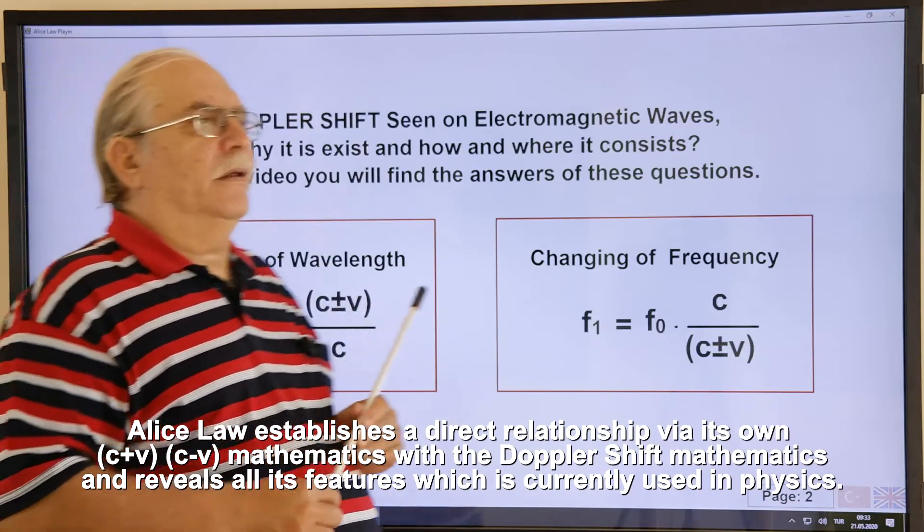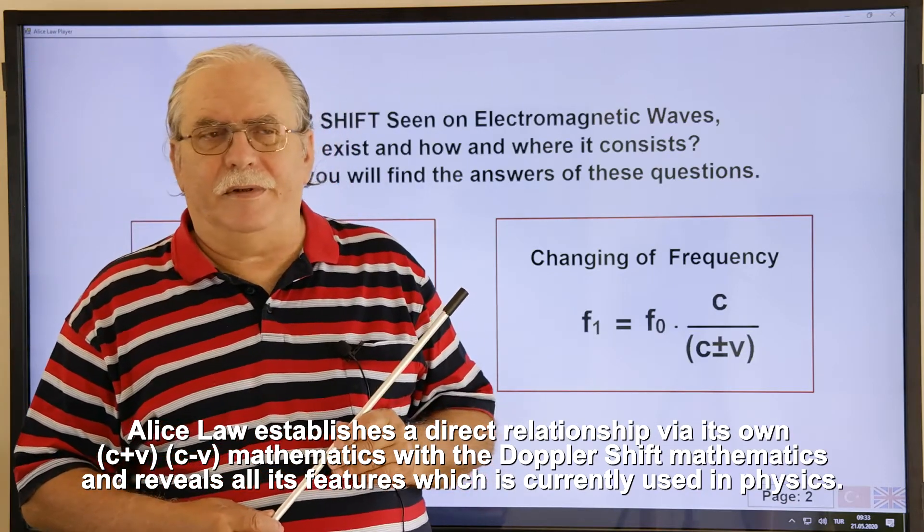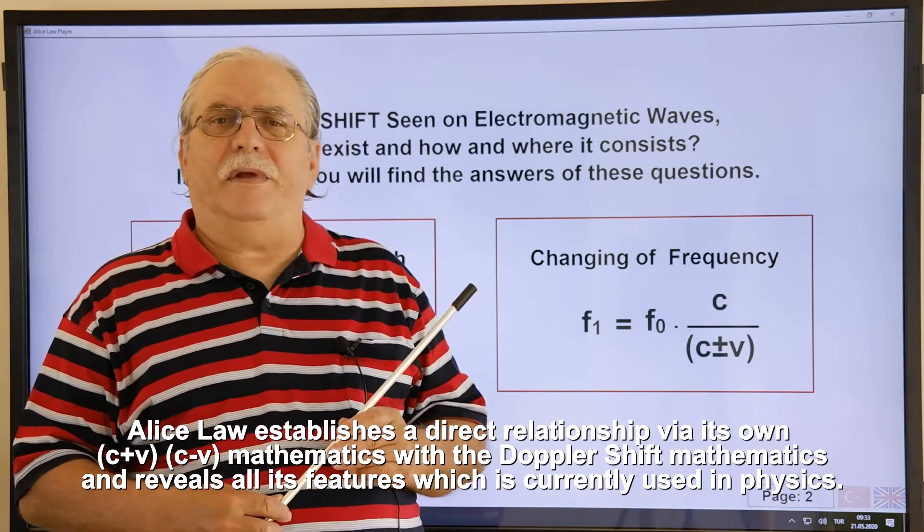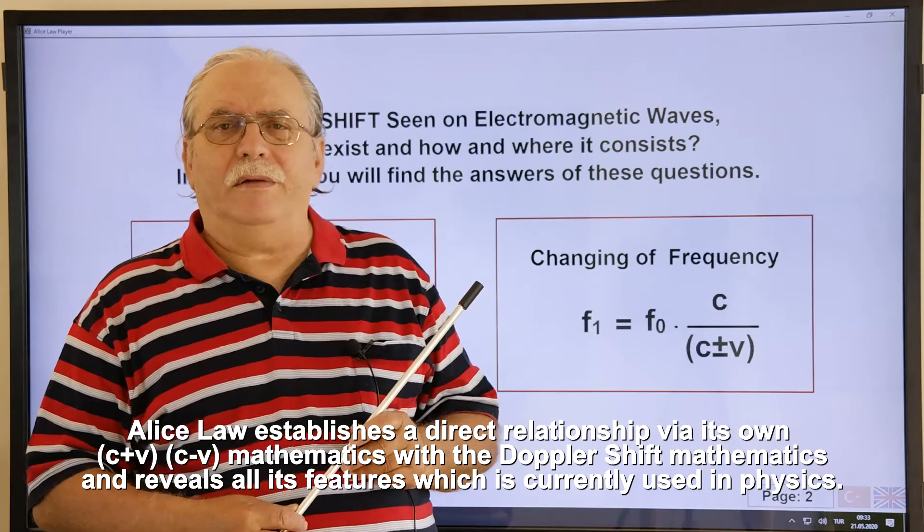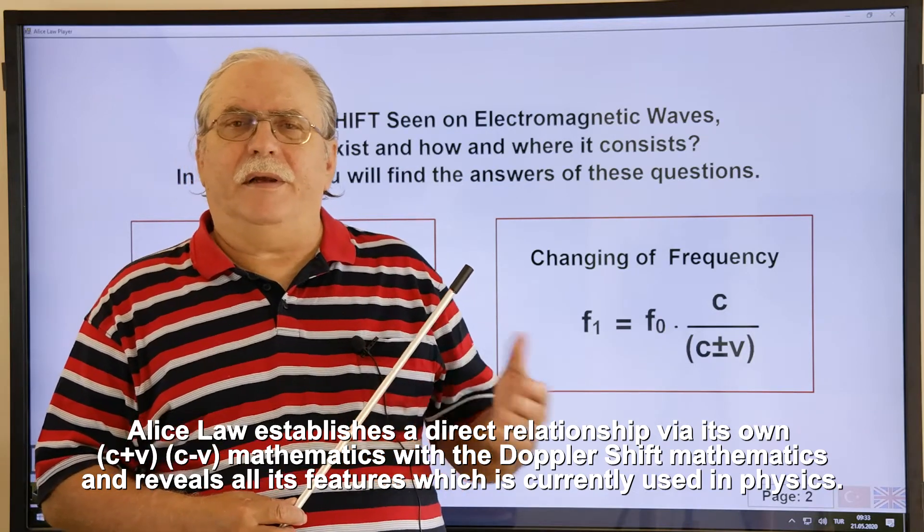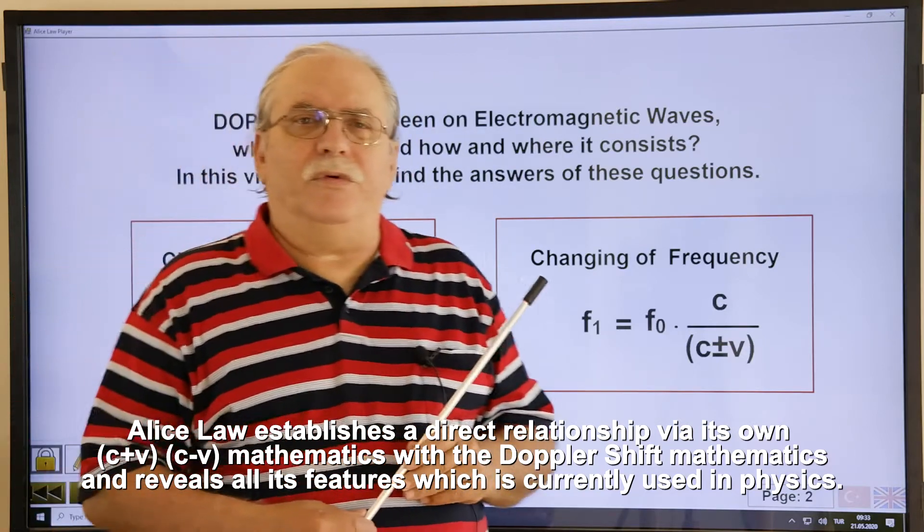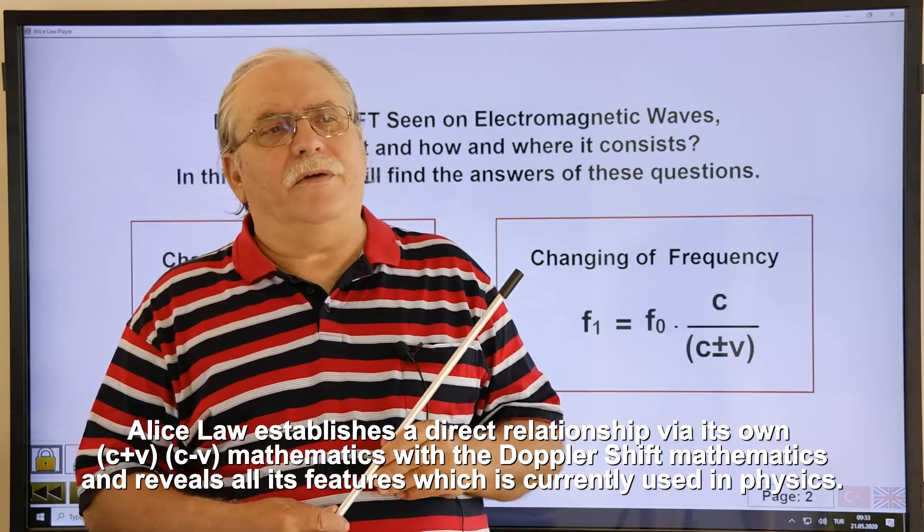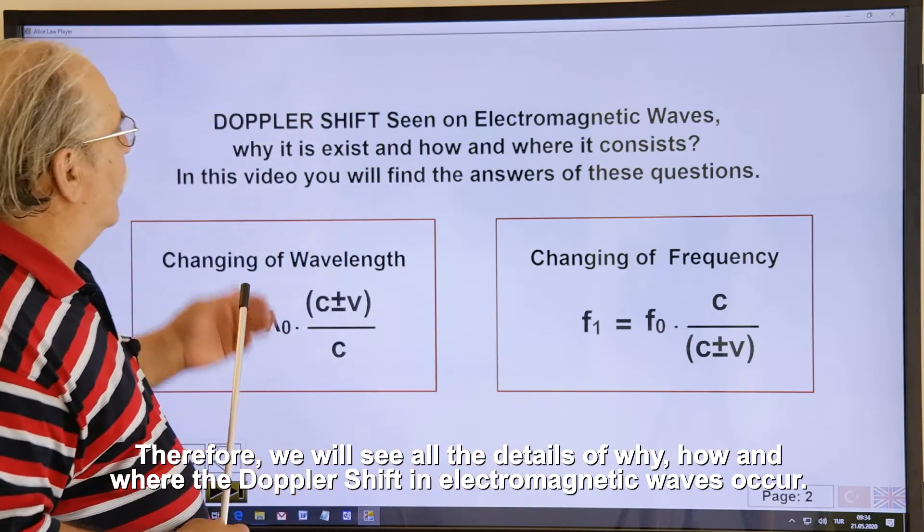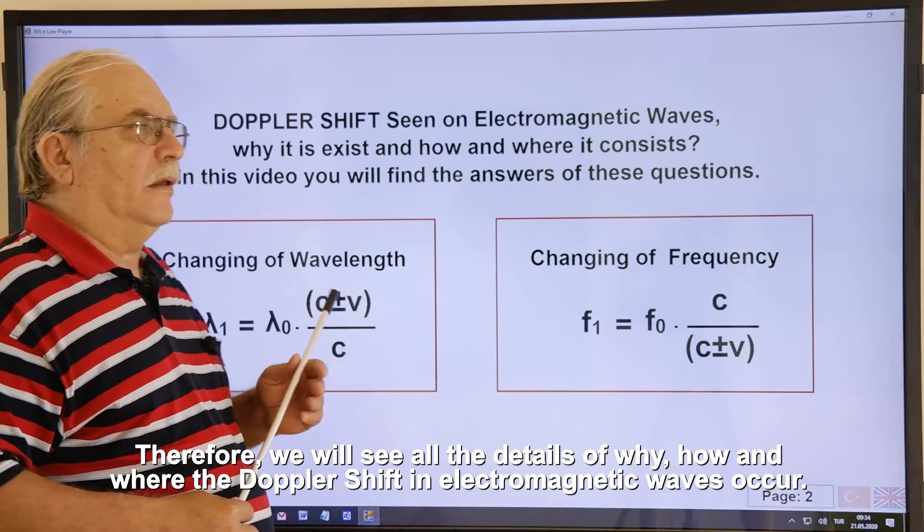Alice Law establishes a direct relationship via its own C plus V C minus V mathematics with the Doppler shift mathematics and reveals all its features which is currently used in physics. Therefore, we will see all the details of why, how, and where the Doppler shift in electromagnetic waves occur.